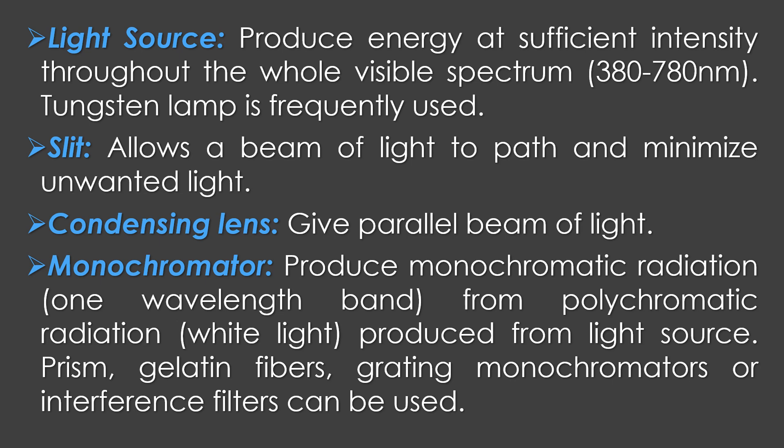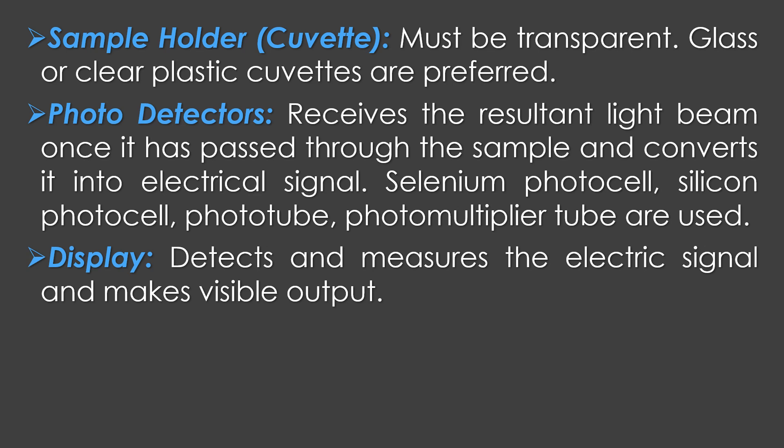The sample holder or cuvette must be transparent; glass or clear plastic cuvettes are preferred. Photo detectors of the colorimeter receive the resultant light beam once it has passed through the sample and convert it into an electrical signal; selenium photocell, silicon photocell, phototube, photomultiplier tube, etc. are used as photo detectors. Finally, the display detects and measures the electrical signal and produces visible output.